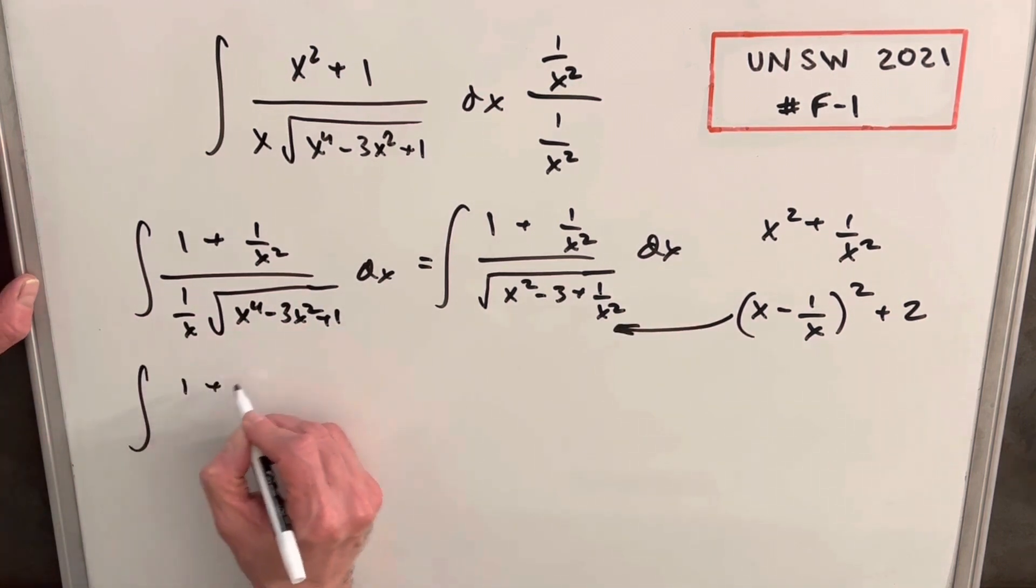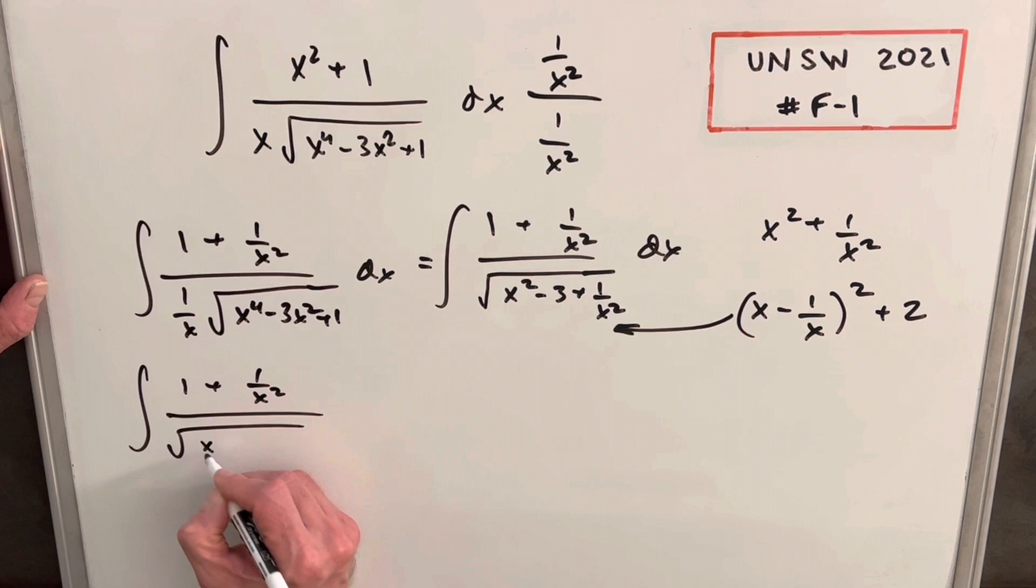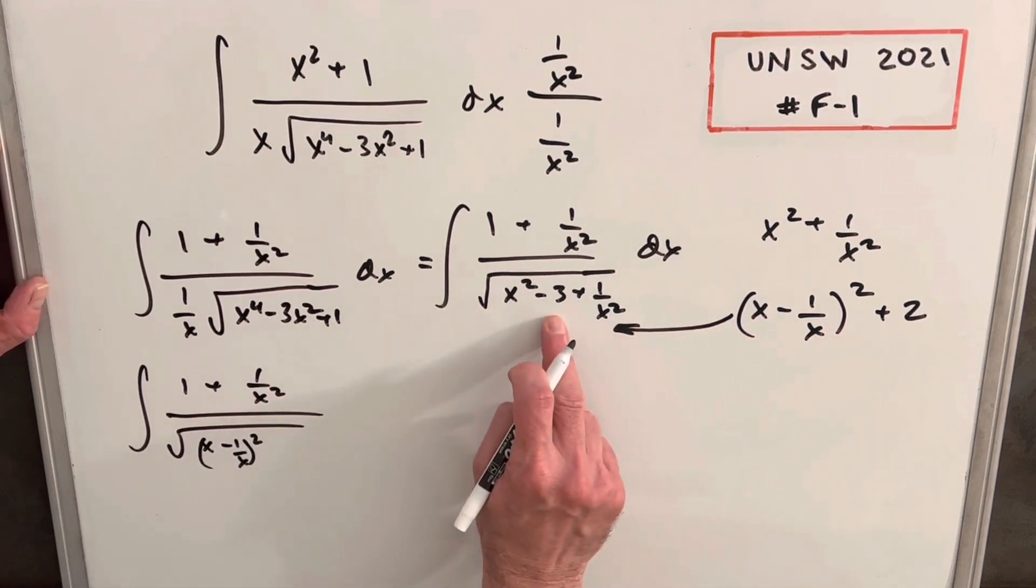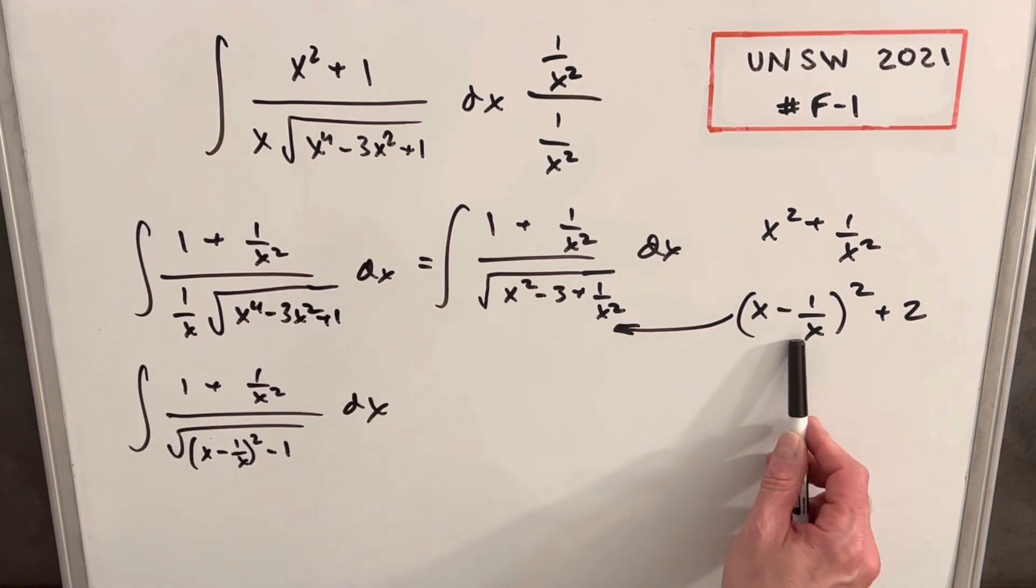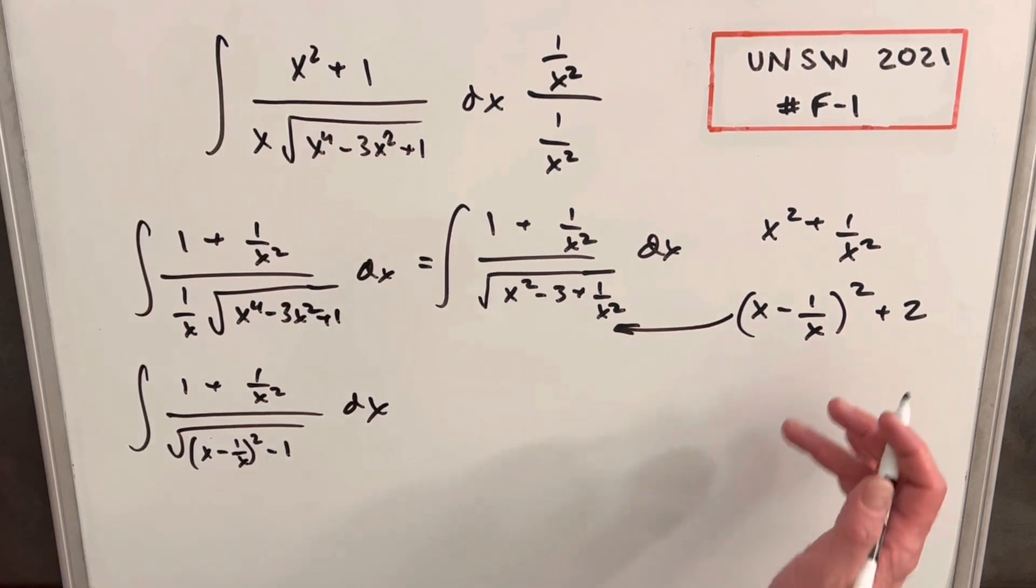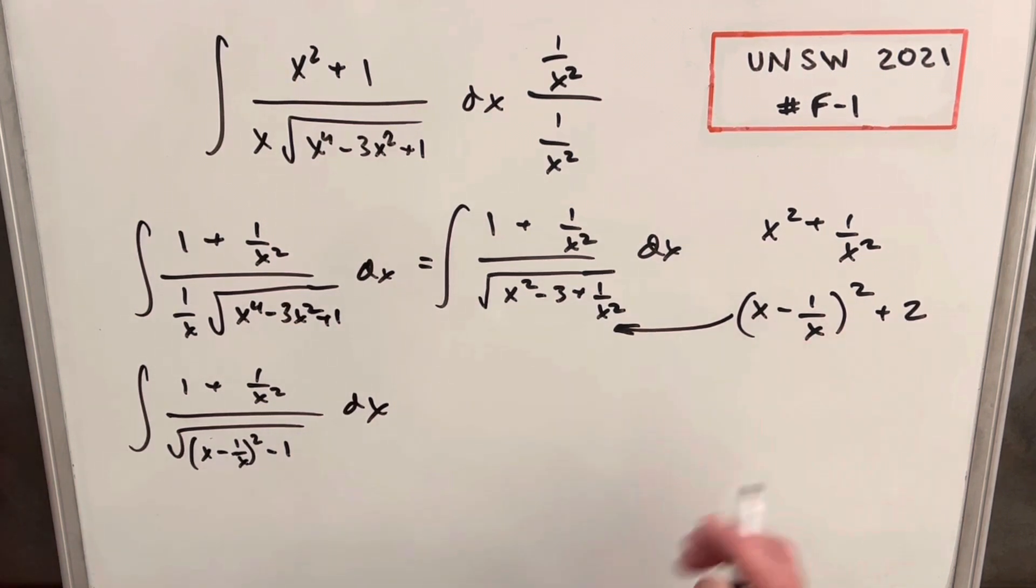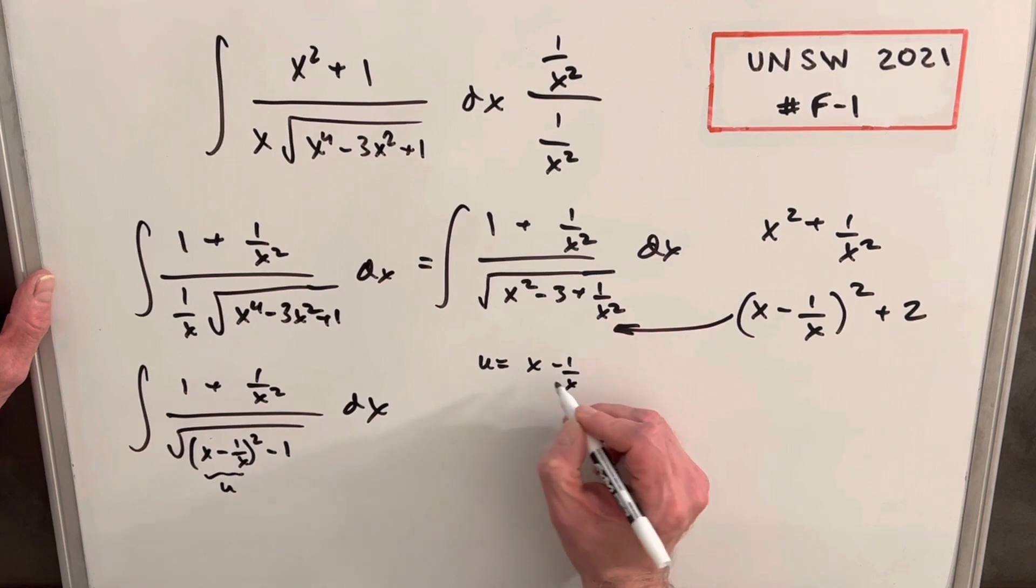Let's take this and put this back into our radical and see what happens. So when I rewrite this, we'll have our 1 plus 1 over x squared. And for our radical, our x squared plus 1 over x squared is just going to be this. We're going to have x minus 1 over x squared. Then we're going to have plus 2 minus 3. That's just minus 1. You may be wondering why I chose to do x minus 1 over x instead of x plus 1 over x. Well, the reason is I'm going to do a u substitution, and that minus sign is going to help me out. So I'm going to make my u this right here. So u equals x minus 1 over x.